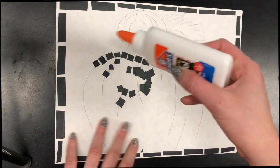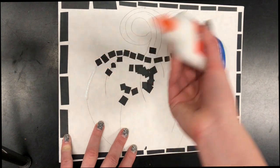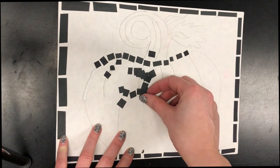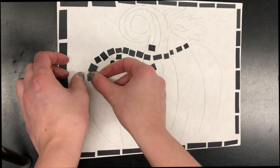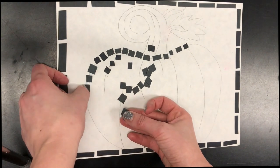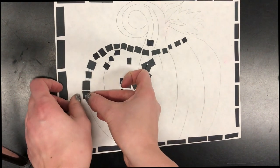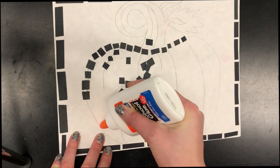So a trick to making this easier for you is you're going to take your white glue and you're going to draw a line on the paper with the glue. And then you're just going to put these on top of that line leaving a little space in between. Draw another line because I used that all the way up already.